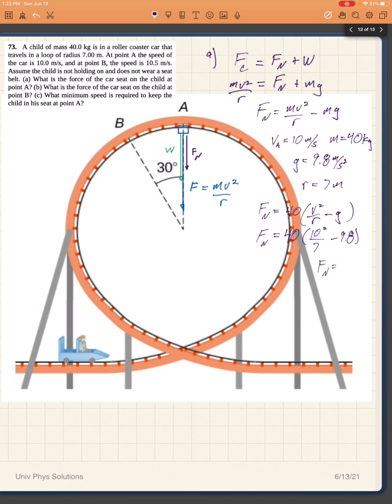Let's put that on the calculator. So 10 squared, that's 100 over 7, minus 9.8 times 40.